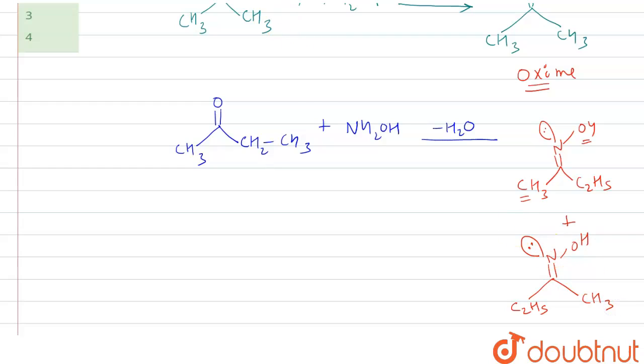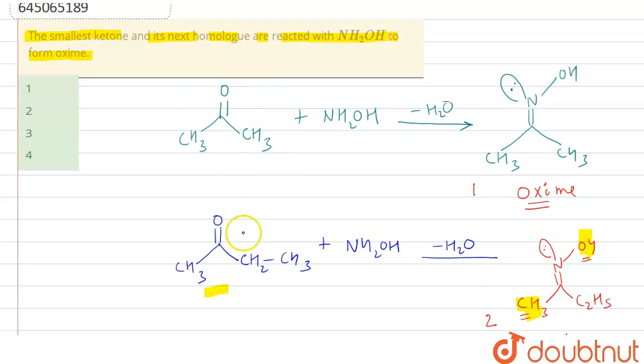So we can say that this next homologous will give two types of oximes: first, this methyl group is anti with OH, and second, this ethyl group is anti with OH. We will get total one oxime, two oximes, and three oximes from acetone and its next homologous.